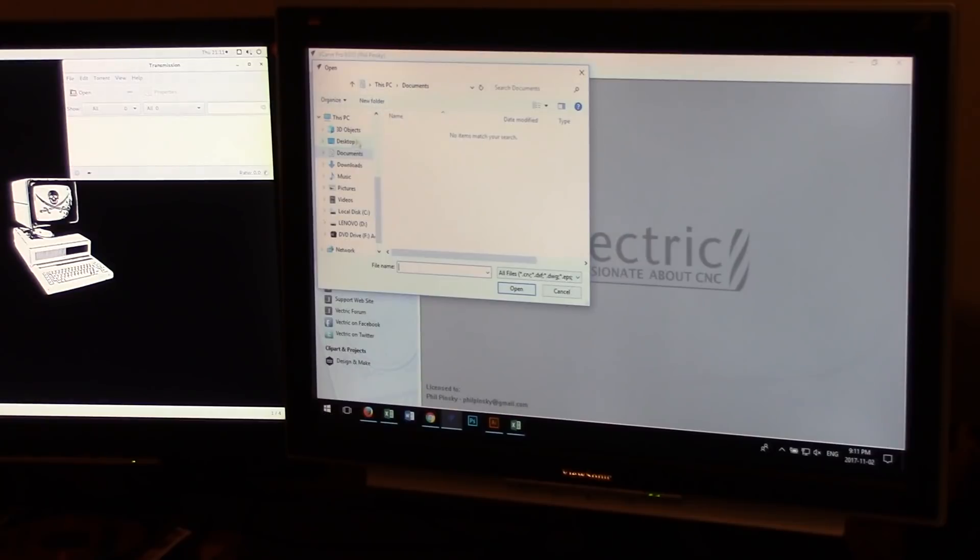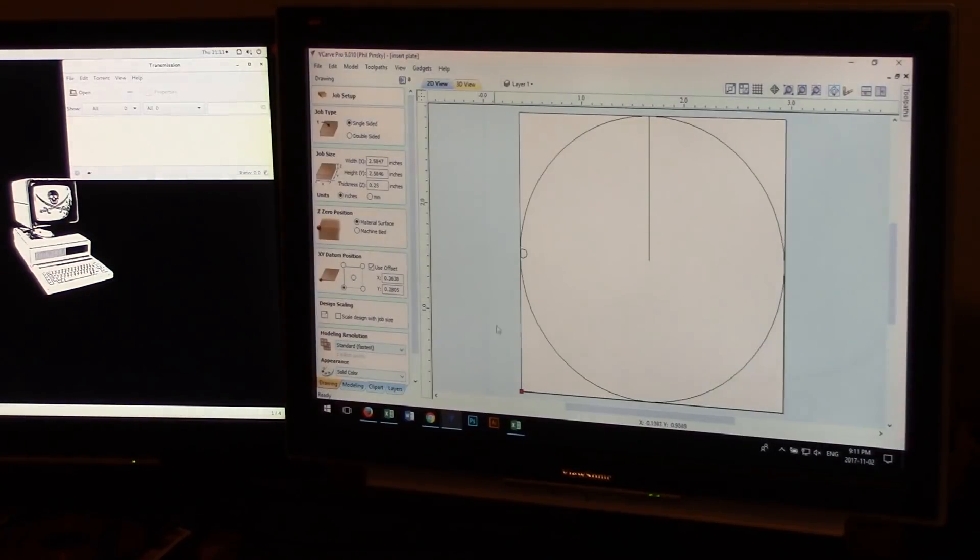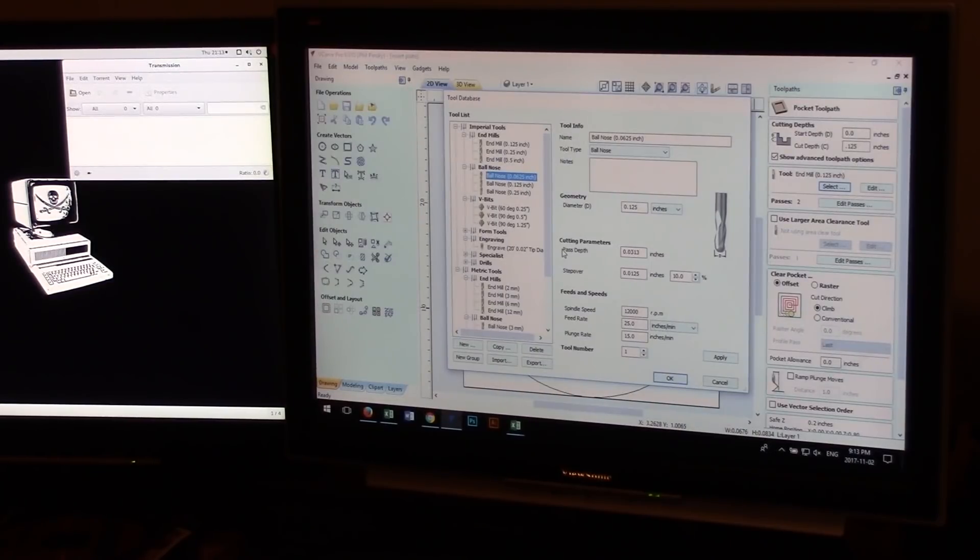I won't go into the nuts and bolts of CNC in this video, as it's not really a tutorial, but I will say that aluminum needs more steps and a slower feed rate than wood. Ask me how I know.